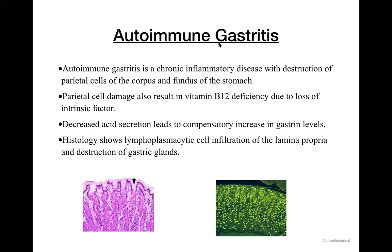Autoimmune gastritis is a chronic inflammatory disease with destruction of parietal cells of the corpus and fundus of the stomach. The antibodies formed are antiparietal cell antibodies that destroy the parietal cells present in the fundus and body. Parietal cell damage also results in vitamin B12 deficiency because of loss of intrinsic factor. Apart from producing acid, parietal cells also produce intrinsic factor responsible for absorption of vitamin B12. So these patients will have decreased acid — hypochlorhydria — and will suffer from vitamin B12 deficiency.